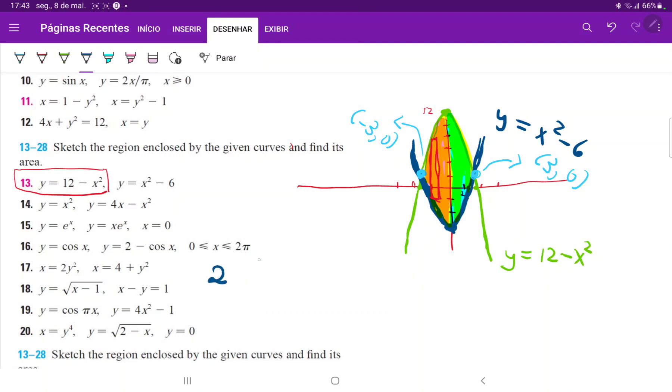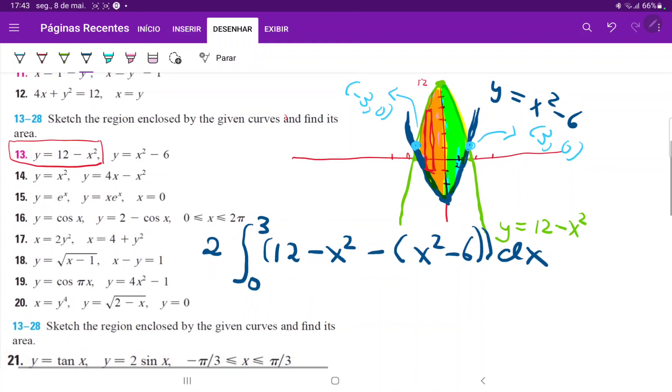So this is twice the integral from 0 to 3 of the upper function minus the lower function. So the upper function is 12 minus x squared, and then minus the lower function, which is x squared minus 6. And then all of this times a dx. We can't forget that dx is the width of our rectangles or else we don't have an area.